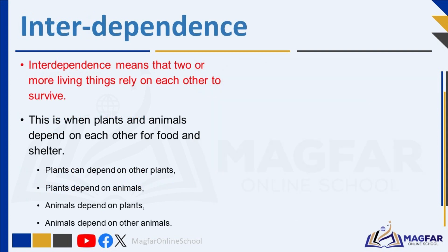All living things and non-living things depend on each other. Interdependence means that two or more living things rely on each other to survive. We call the relationships between plants and animals interdependence. This is when plants and animals depend on each other for food and shelter, and the interdependence can take many forms.